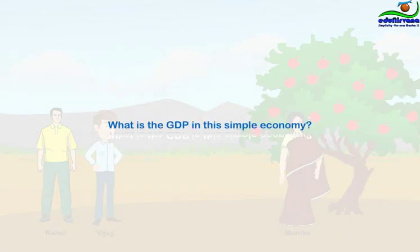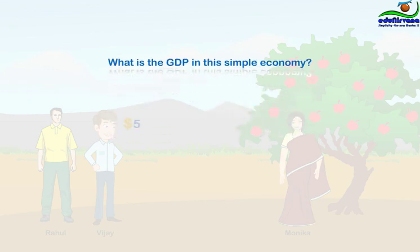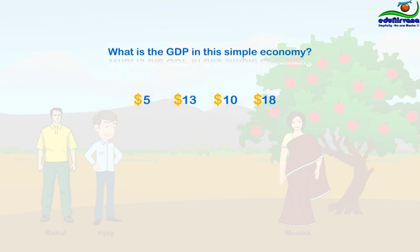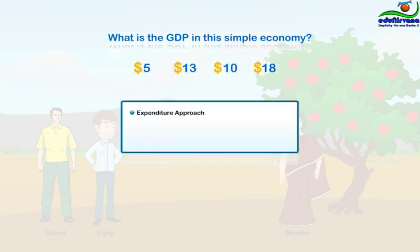Monika consumes the juice. What is the GDP in this simple economy? Is it $5? Is it $13? Is it $10? $18? Or some other dollar amount? We use three approaches in our island to compute GDP: the expenditure approach, the income approach, and the value added approach. Let me describe each approach in terms of this simple economy.